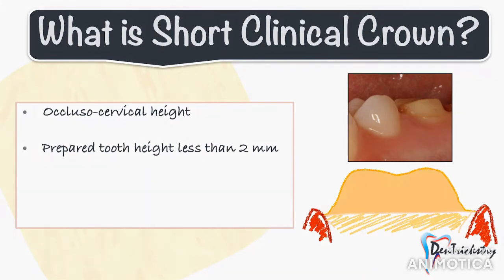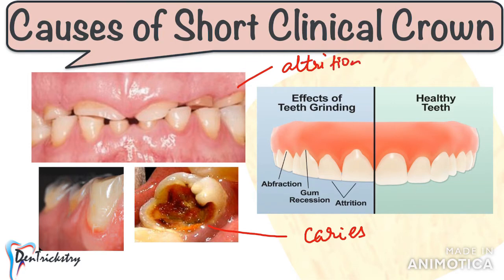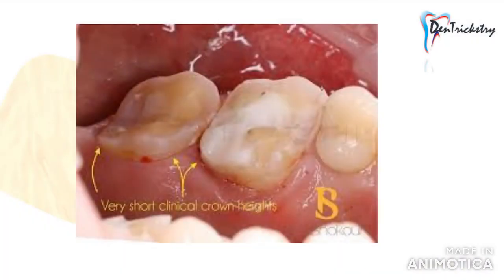There are many factors which alter the occlusal-cervical height of the abutment teeth. It could be because of extensive caries, fracture involving the enamel and dentine, attrition, abrasion and erosion of teeth, or a developmental anomaly as well. When you take a look at this picture, what do you see? Inadequate occlusal-cervical height, right?